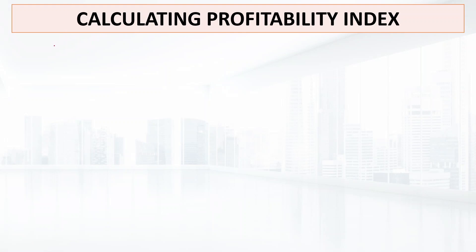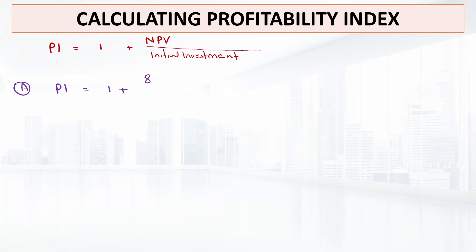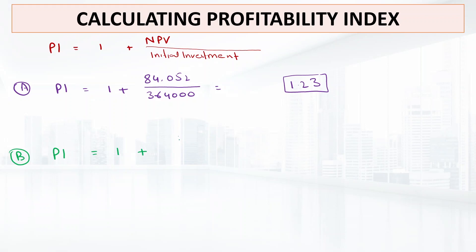Lastly, we calculate the profitability index, which equals 1 plus NPV divided by initial investment. For Project A: PI = 1 + 84,052 / 3,64,000 = 1.23. For Project B: PI = 1 + 15,627 / 52,000 = 1.30. Since a higher profitability index is considered better, we accept Project B according to the profitability index criterion.